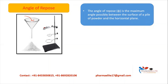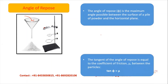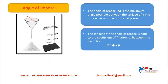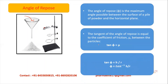Angle of repose is the maximum angle possible between the surface of a pile of powder and the horizontal plane. The tangent of the angle of repose — that is theta — is equal to the coefficient of friction mu. So if we are getting the angle of repose theta, then tan of theta will give us the coefficient of friction. How is the angle of repose measured?